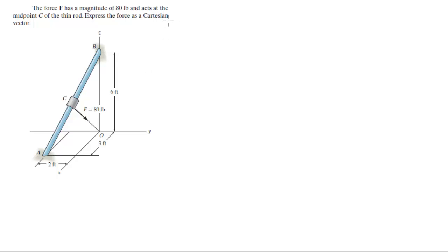Okay, so first we need to find the points. Point A sits at 3i minus 2j plus 0k. Point B sits at 1.5i minus 1j plus 3k.